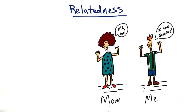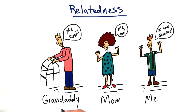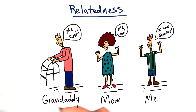For example, you might compare yourself to one of your parents, say your mother, and you might be looking at traits that you share in common. And then we could look at your mother's parents — one of her parents, let's say her father, your granddaddy — and we could essentially compare the same traits among all of us.